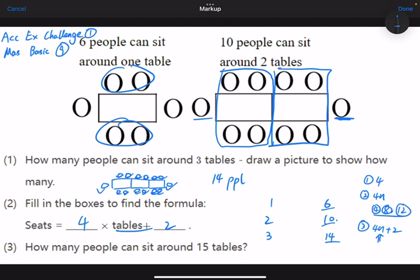And then the last question, question number thirteen: How many people can sit around fifteen tables? Let me clear up some space. The table number is fifteen, so we just plug it into the formula.